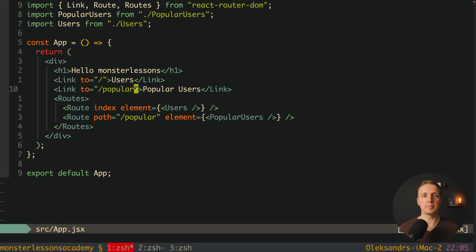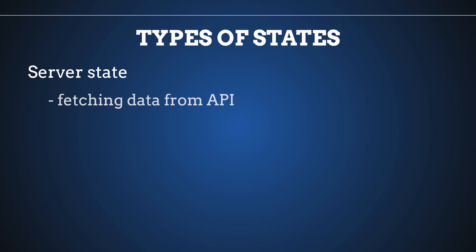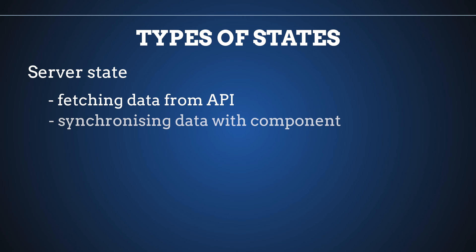Our next step is to define our state. Let's talk about what state you actually need, because in your applications you have two different types of states. You either have server state — fetching data from the API and synchronizing it with your component — or you have client data like your theme or client filters. Jotai implements client state, meaning all properties we simply create inside JavaScript without server APIs.